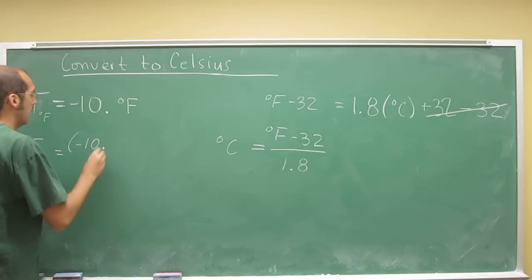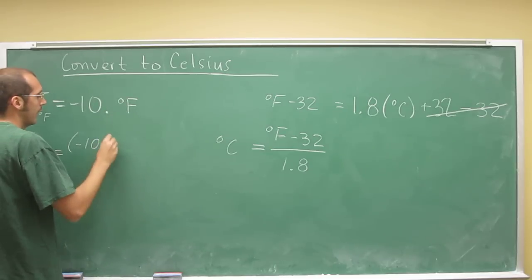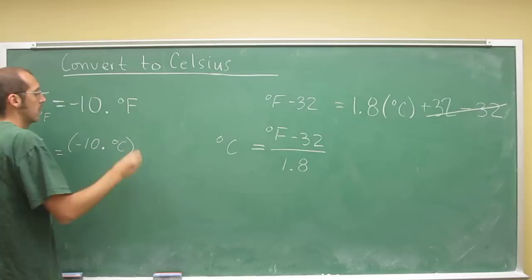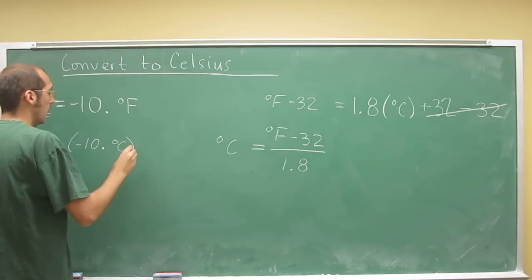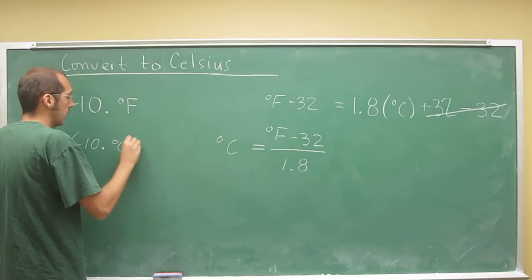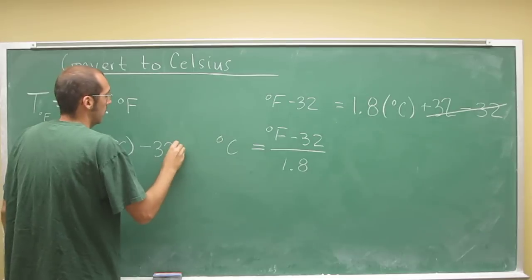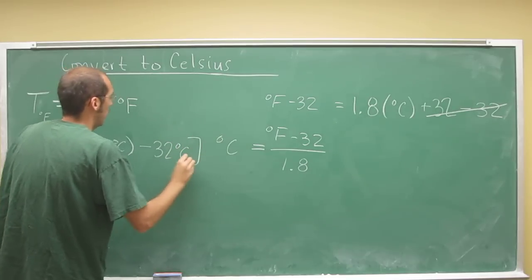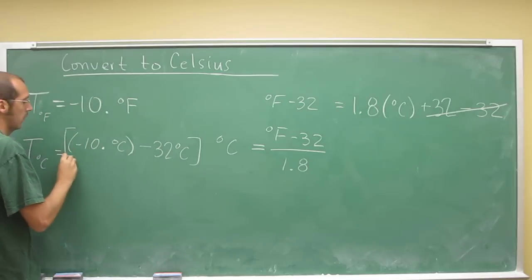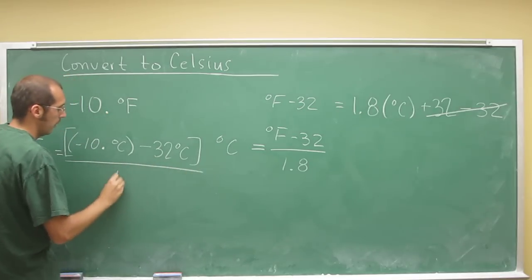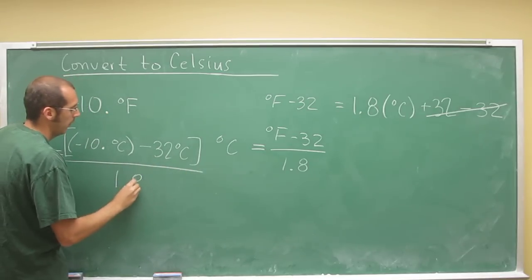Negative 10 decimal point. So, like I said, I just convert the units straight away. Okay, minus 32 degrees, do it this way, divided by 1.8.